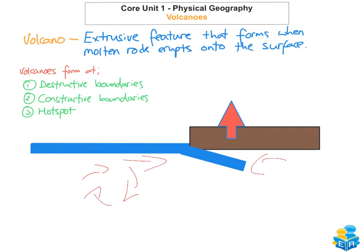The convection currents under the continental Eurasian plate are moving in one direction, and the currents under the other plate move in the opposite direction, which causes the two plates to move towards each other. As they collide, the heavier oceanic Philippine plate subducts. Due to the intense heat and pressure within the mantle, the rocks of the oceanic Philippine plate start to melt.